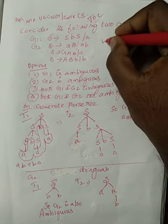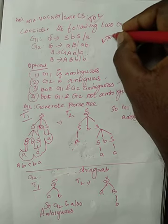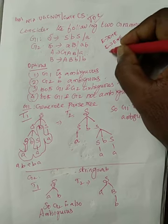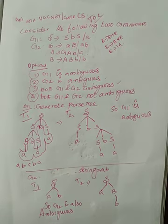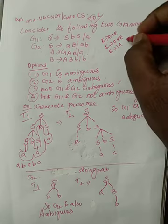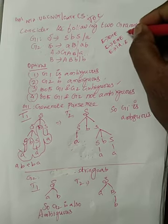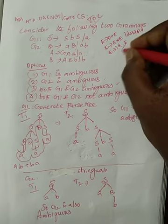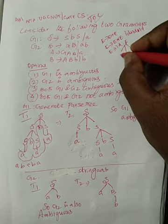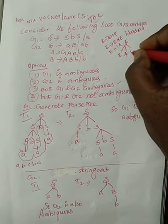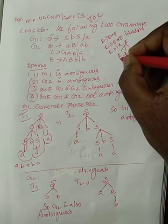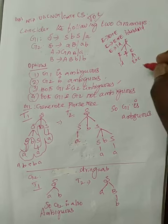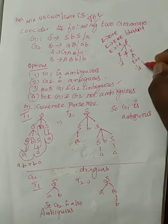For example, if I have E tends to E plus E, E tends to E star E, E tends to ID. Here I can have the common string ID plus ID star ID, in which I can generate E tends to E plus E, and this will be ID. And again, I will be generating E tends to E star E, and this will be ID, ID.